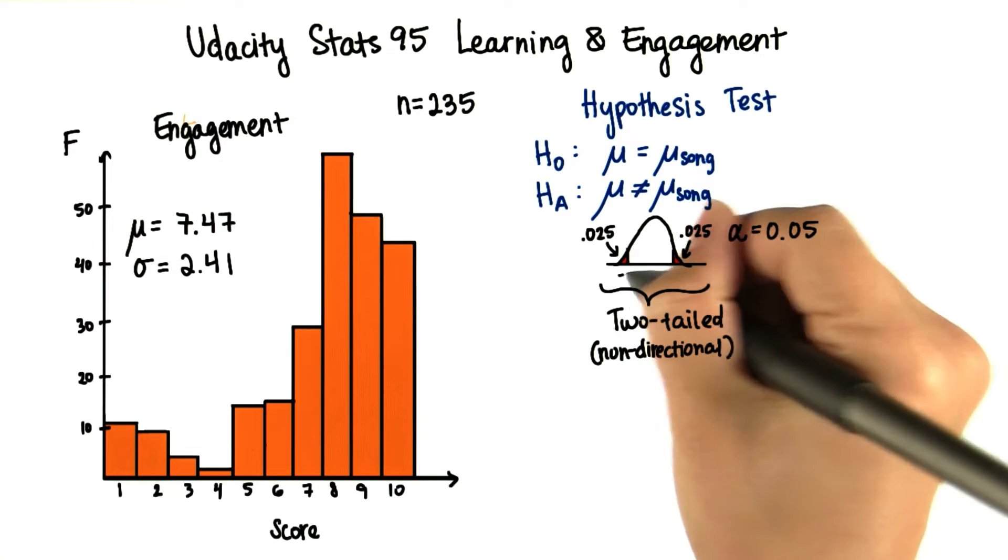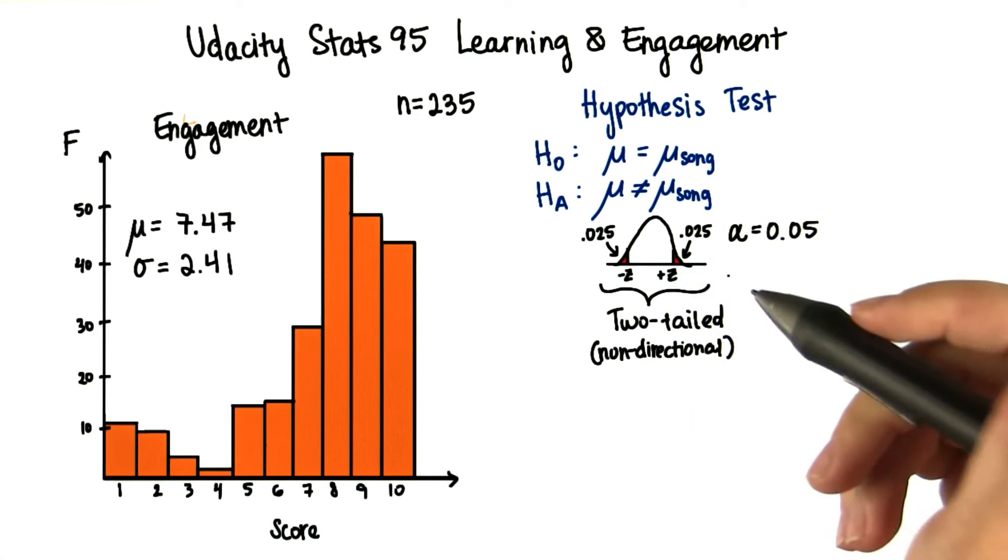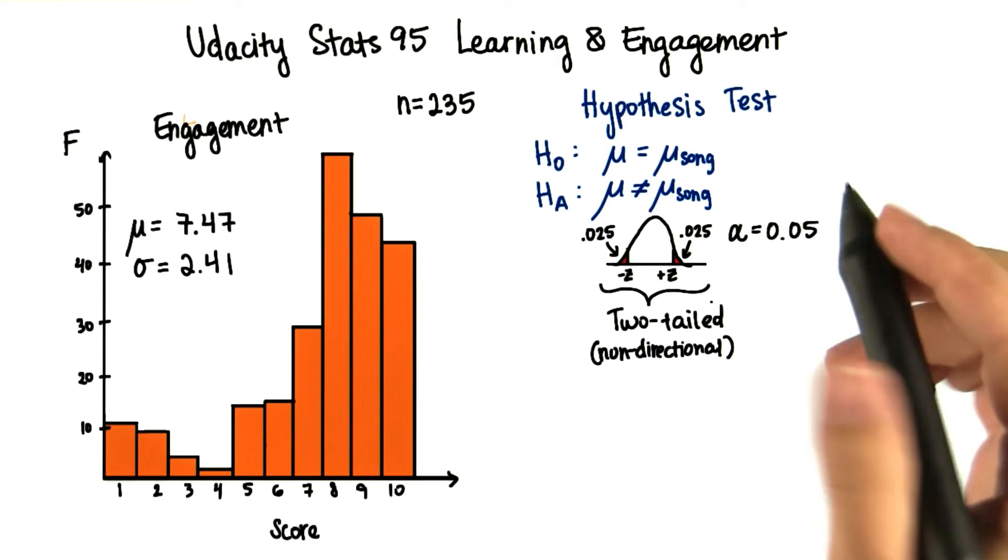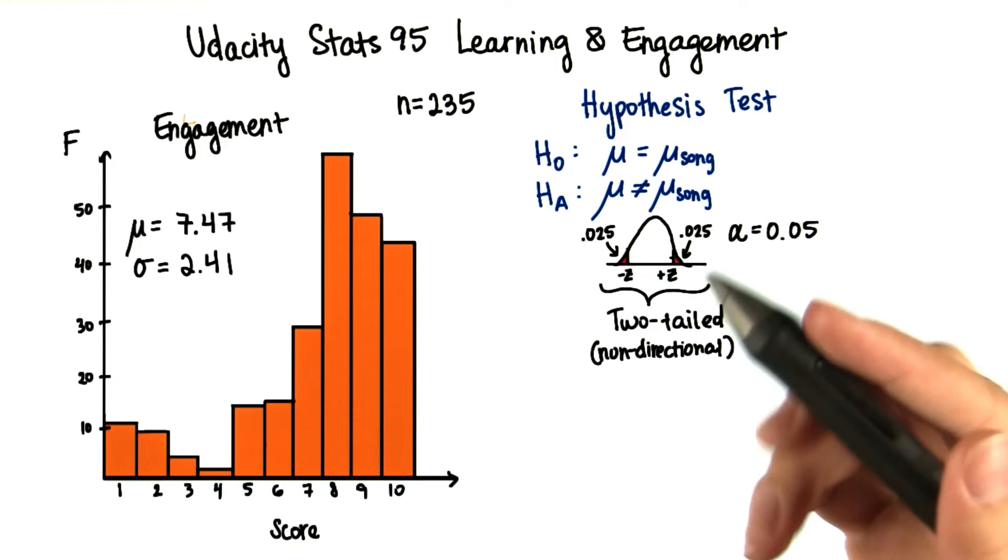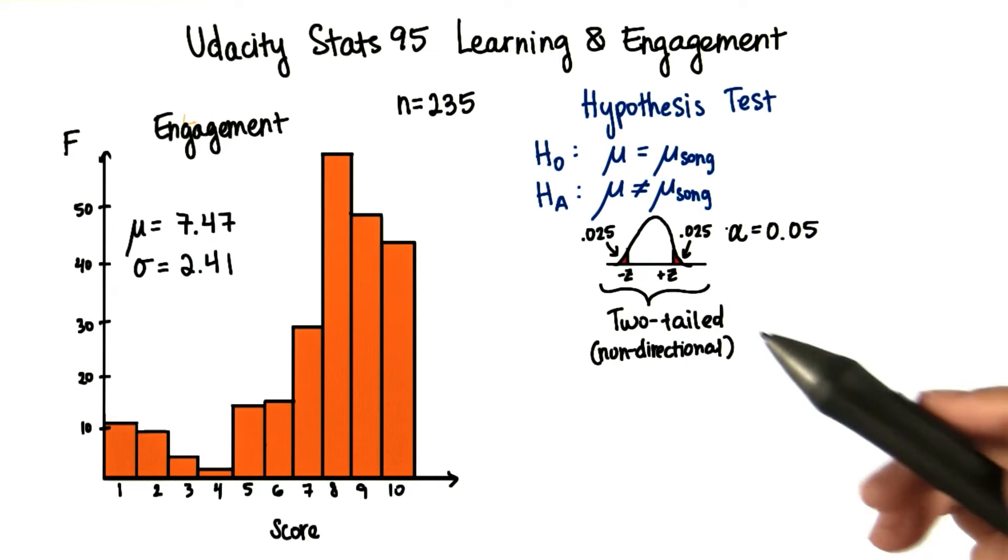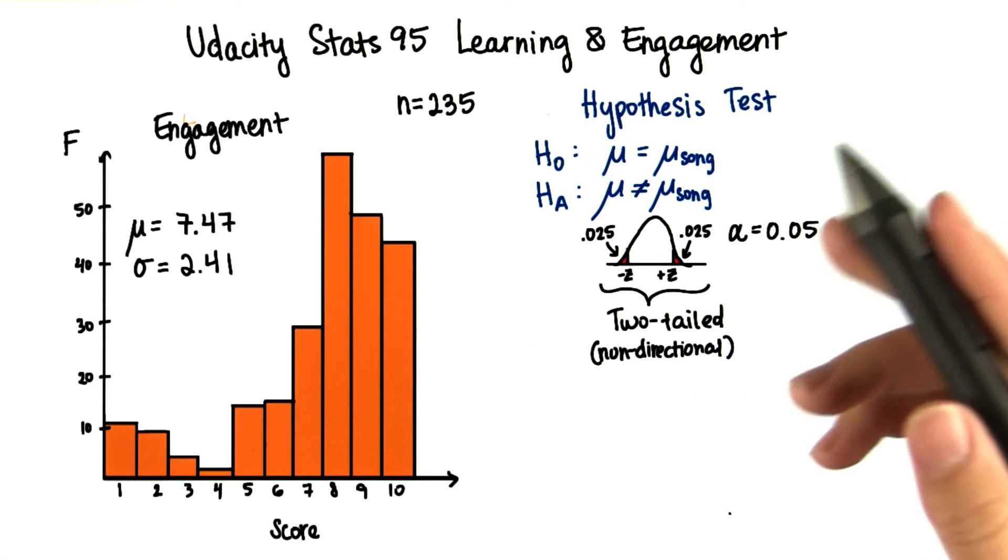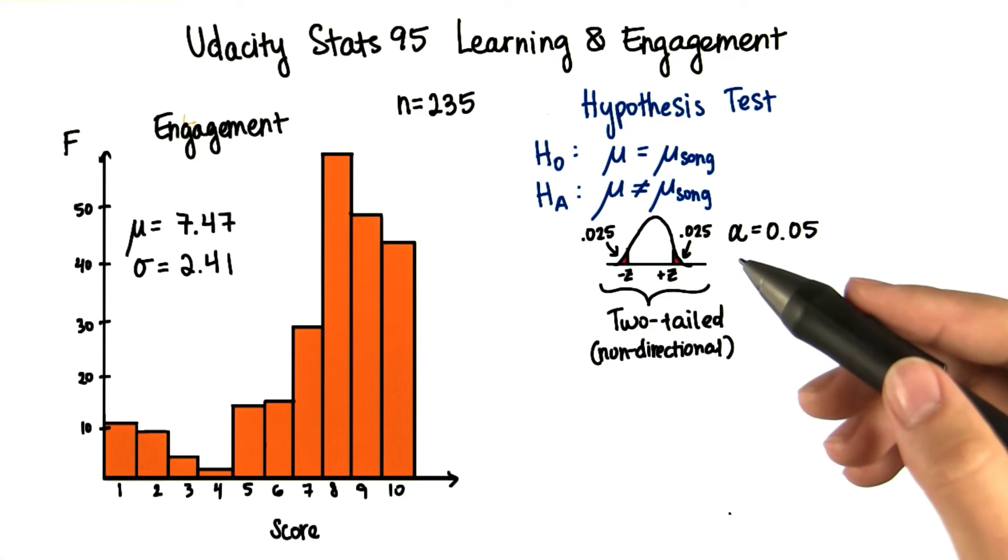Then we'll find the z critical values. And finally, we'll find the z-score of the sample mean and see if it falls in the critical region. Based on that, we'll decide whether to reject or fail to reject the null hypothesis. That's an overview of everything we're going to do in this lesson.